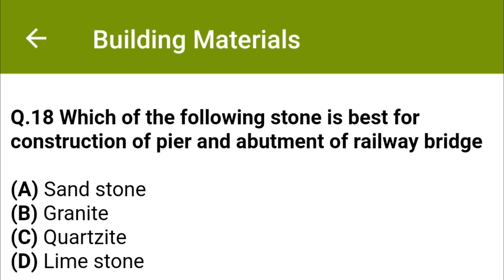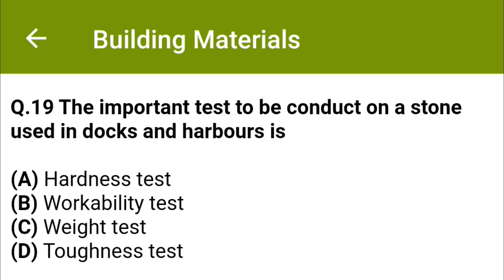The following stone is best for construction of piers and abutments of railway bridges: Option A sandstone, Option B granite, Option C quartzite, Option D limestone. The correct answer is Option B, granite. The important test to be conducted on a stone used in docks and harbors is Option A hardness test, Option B workability test, Option C weight test, Option D toughness test. The correct answer is Option C, weight test.